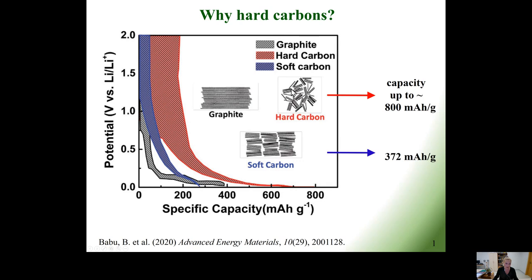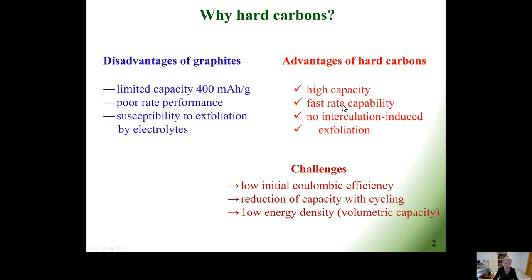The porosity and the small size of the graphite-like domains provide fast lithium transport channels and reduce the solid electrolyte diffusion length for lithium, thus improving the cycling rate. The microstructure of hard carbons can also buffer well against the local volume change during lithium insertion, thus enhancing the stability of the structure.